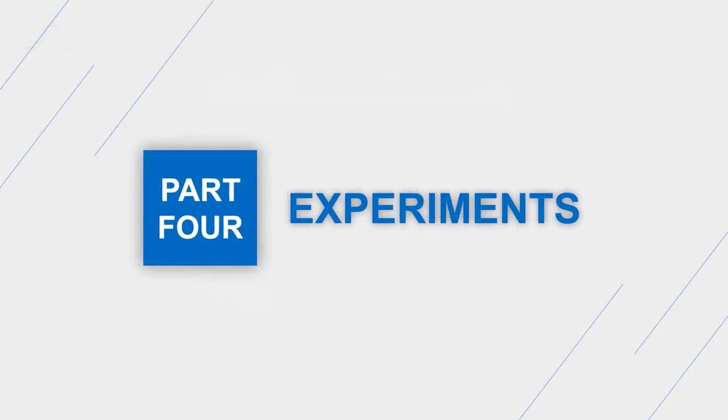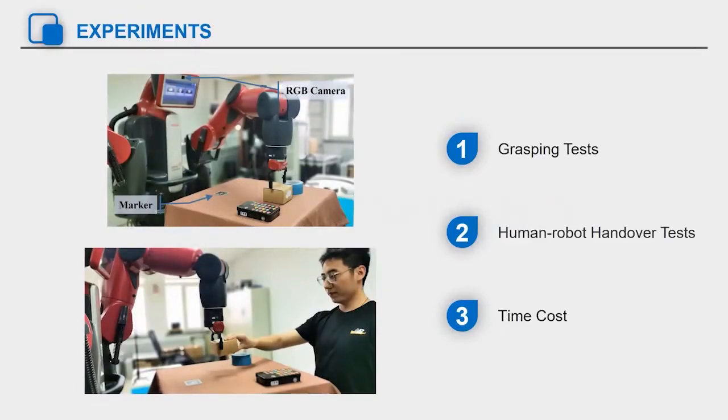Part 4 is the experiment. We verify the effectiveness of our algorithm on the Baxter robot platform by grasping tests and human robot handover tests. At the same time, we also calculate the time cost of our method.